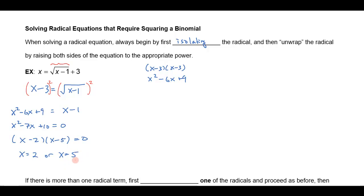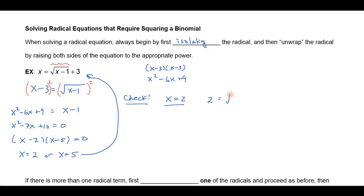Now remember that these are only potential solutions — I have to check those to see if they will in fact work. So let's plug them in. If I check x equals 2, I would get 2 equals the square root of 2 minus 1 plus 3. Well, it's not going to work — I'm going to get the square root of 1 which is 1, and 1 plus 3 is 4, and that doesn't equal 2. So that one doesn't work. I'm going to have to throw that one out — that's an extraneous solution.